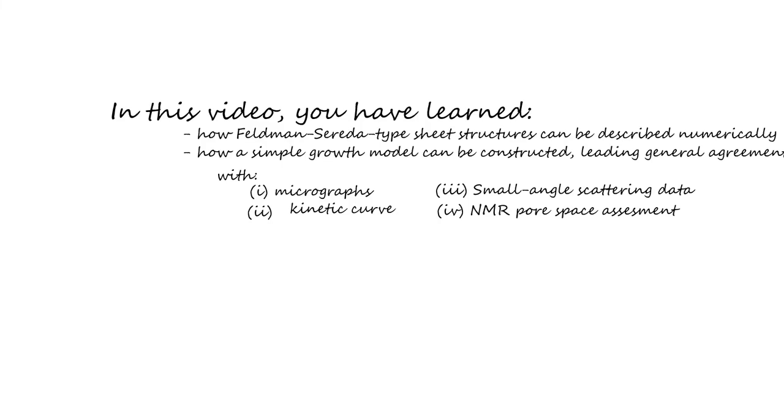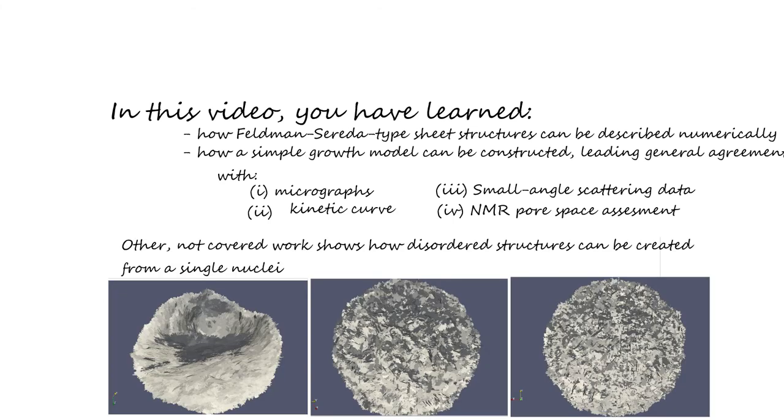In this video, we have learned how a Feldman-Sereda type sheet structure can be described numerically and how a sheet growth model can be constructed. For this simple sheet growth model, general agreement has been shown to range of data which supports the idea of this model. Before this video closes, as a teaser, it should be pointed out that also other growth models have been studied over the course of Merlin's PhD thesis. One particularly interesting allows the sheets to change their growth direction during the growth step. This creates highly disordered structures such as these properties from just a single nucleus. Thanks for watching.